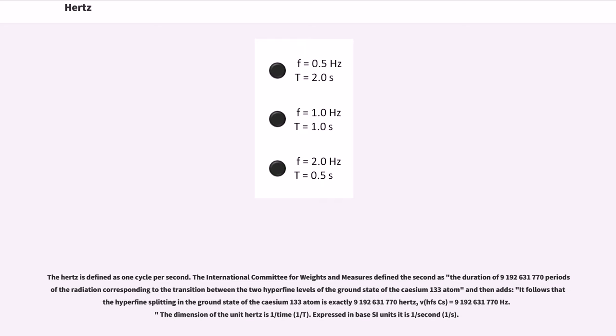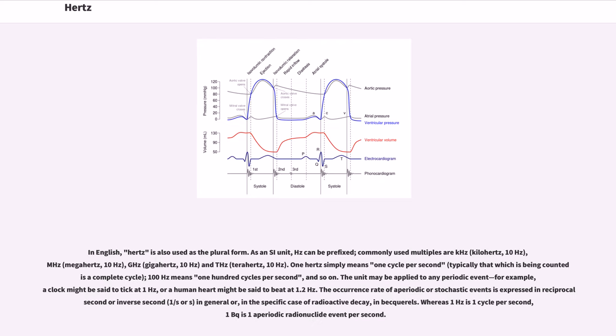The dimension of the unit hertz is 1/time (1/T). Expressed in base SI units, it is one per second (1/s). In English, hertz is also used as the plural form.